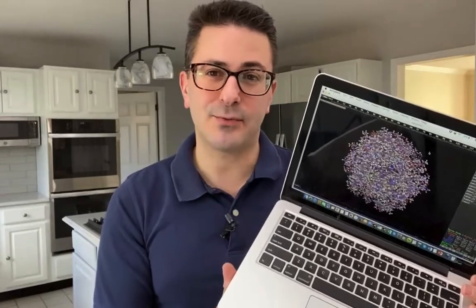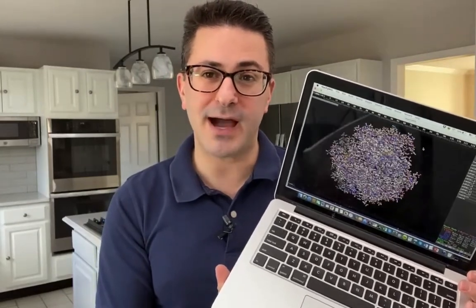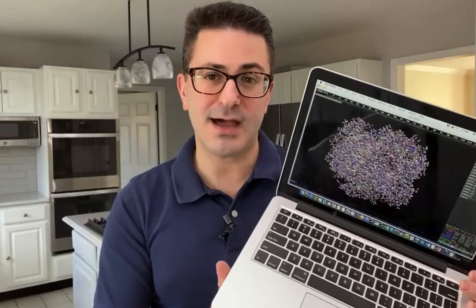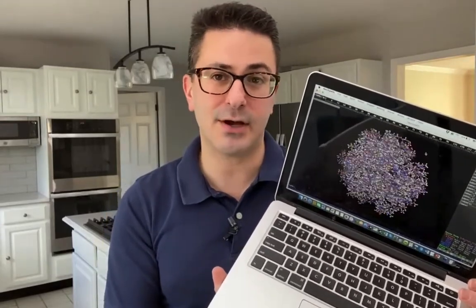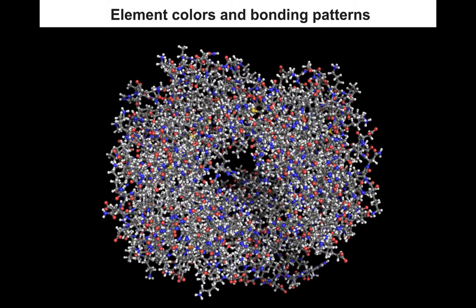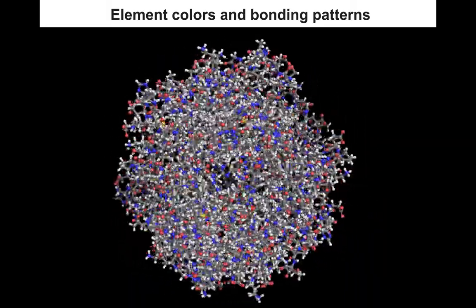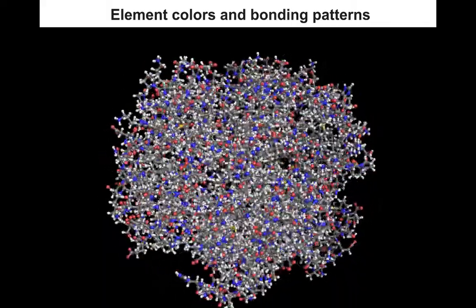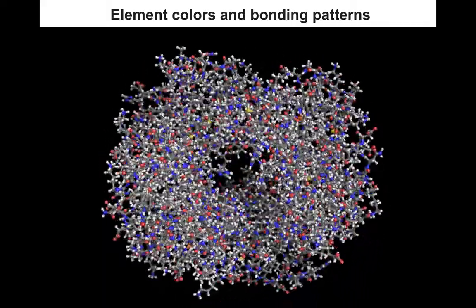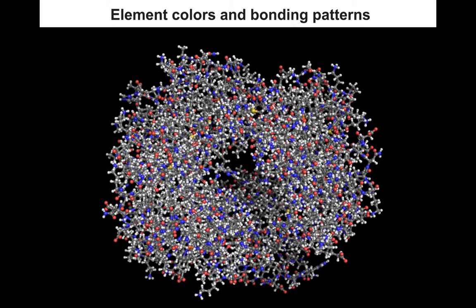We're now going to begin discovering the world of 3D biomolecules using the free molecular modeling software PyMOL. You can open all the files I'm showing by downloading the software. Now that we've been introduced to the atom color coding, we can look at a big biomolecule like this hemoglobin protein and recognize what atoms it's made out of — lots of white hydrogens, dark gray carbons, blue nitrogens, red oxygens, yellow sulfurs, and a few dark brown irons.